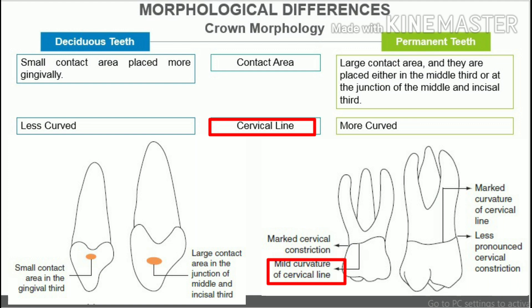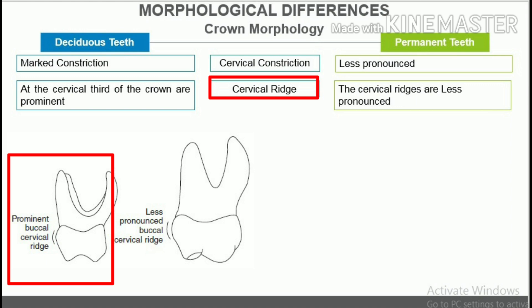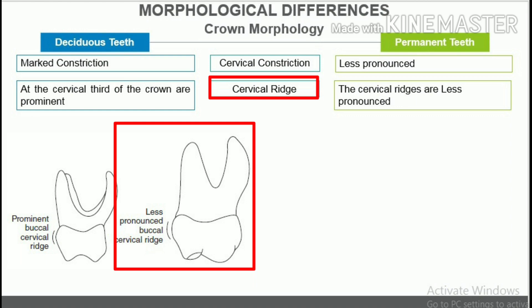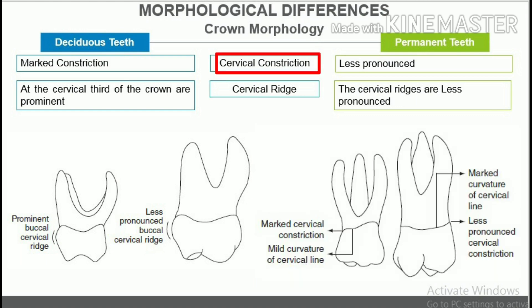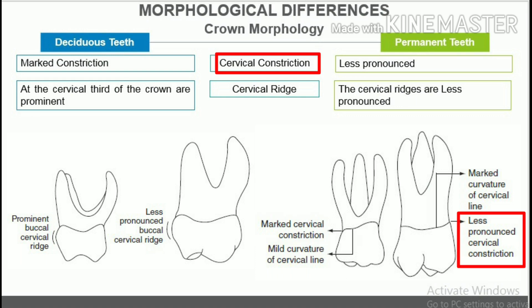Cervical line. In deciduous teeth, the cervical line is less curved; in permanent teeth, it is more curved. Cervical ridge. The cervical ridges at the cervical third of the crown are prominent in all deciduous teeth, especially on the labial surface of anterior teeth and the buccal and mesial surfaces of the molars. In permanent teeth, the cervical ridges are less pronounced. Cervical constrictions. In deciduous teeth, the cervix shows marked constriction between the crown and root, making the crown appear more bulbous. In permanent teeth, the cervical constriction is less pronounced.